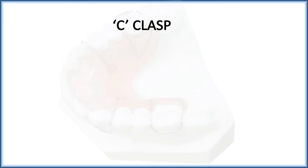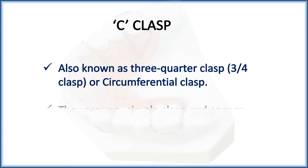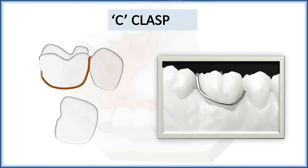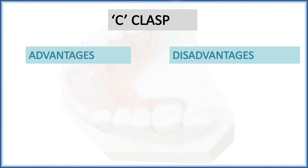Adam's clasp was already discussed. Now we begin with the C clasp. The C clasp is also known as the three-quarter clasp or circumferential clasp. It is a very simple clasp that engages the buccal undercut. Looking at the figure, we have a C-shaped clasp in occlusal view, and in the next figure a buccal view of the C clasp.